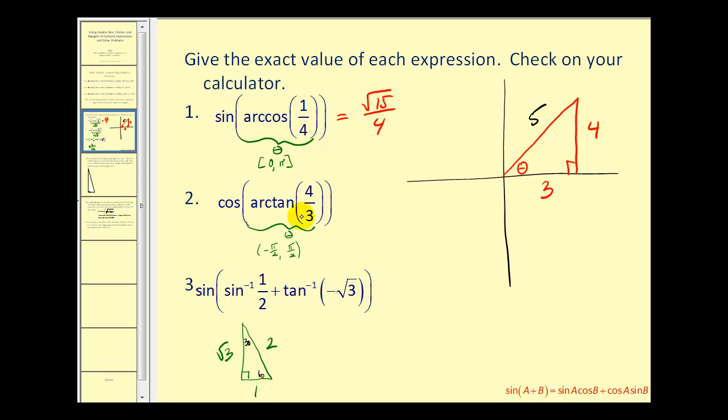Now that we've modeled our angle θ, we want to find the cosine of it. Cosine is adjacent over hypotenuse. So in this case, we'll have 3/5.